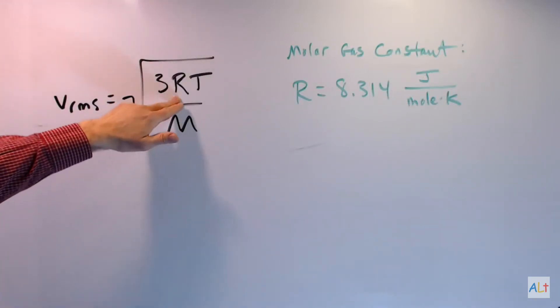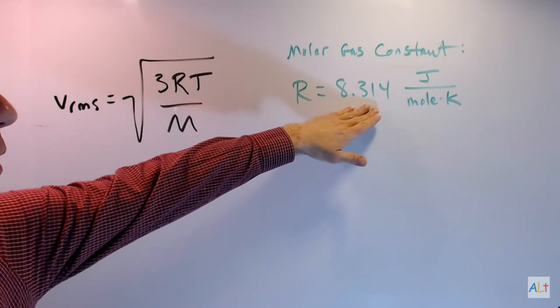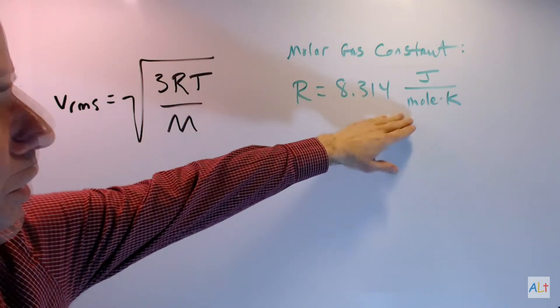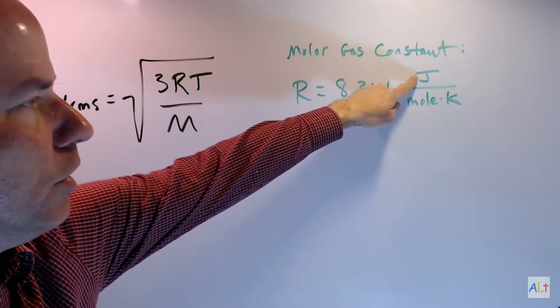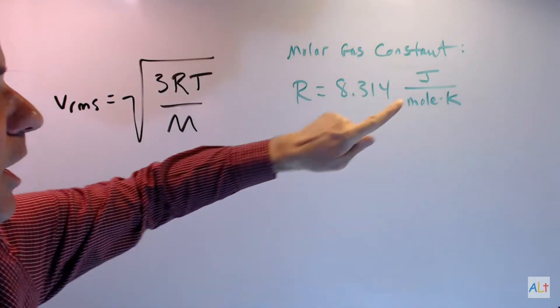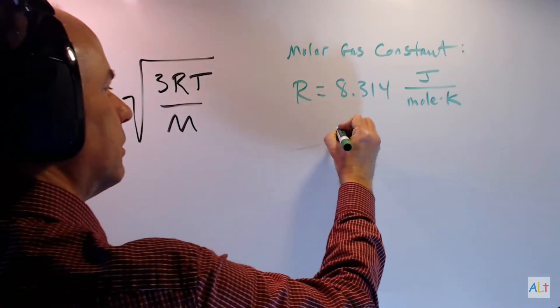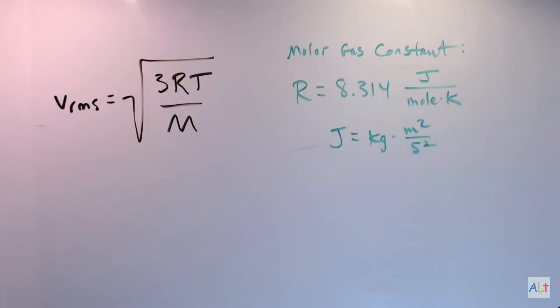Remember that the molar gas constant R is equal to 8.314 joules per mole degree Kelvin. This unit here is going to help us decide what's going on with this because a joule is equal to a kilogram times meters squared over second squared.